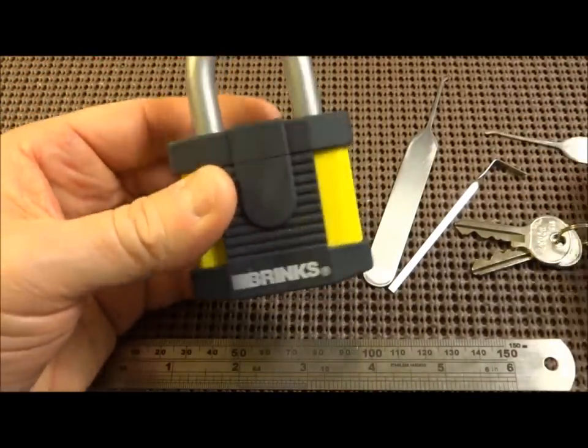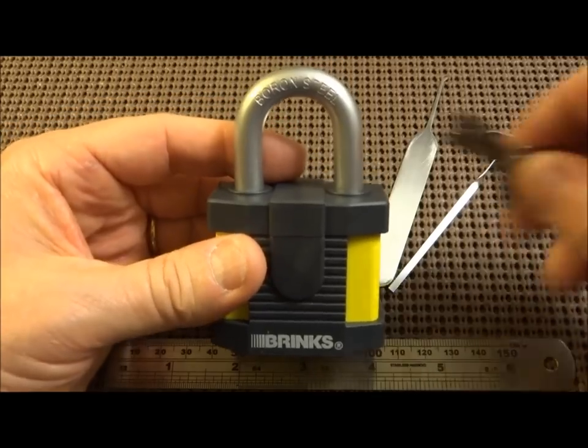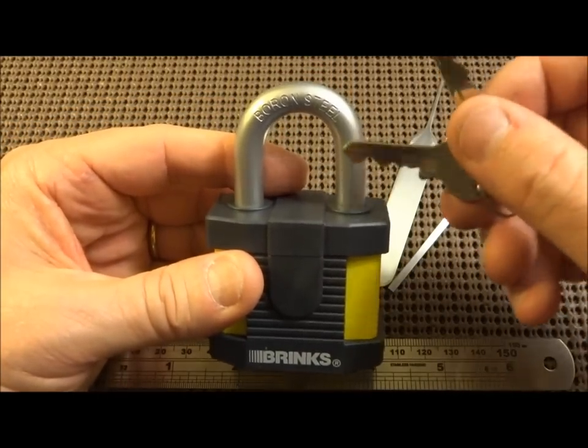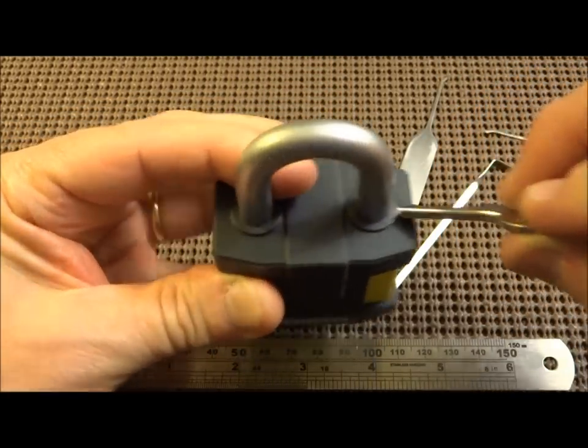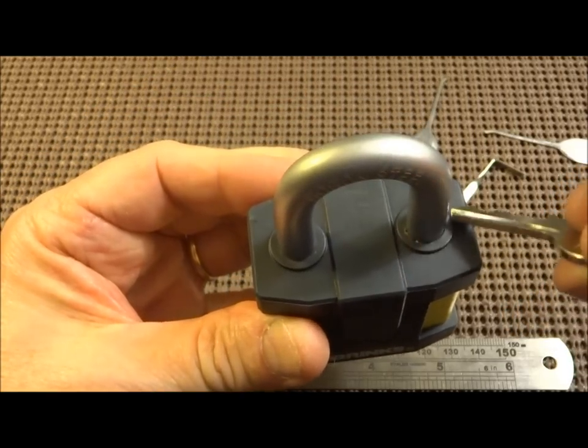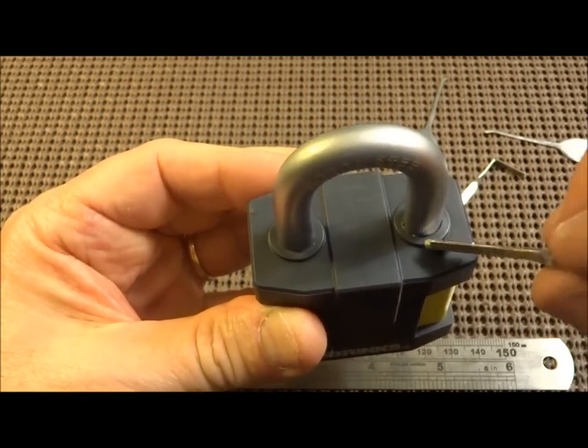Looking at the lock itself, externally it has the boron steel shackle, as I said, and the weatherproofing, interestingly, is a perfect gasket along the top to keep out all of the weather.